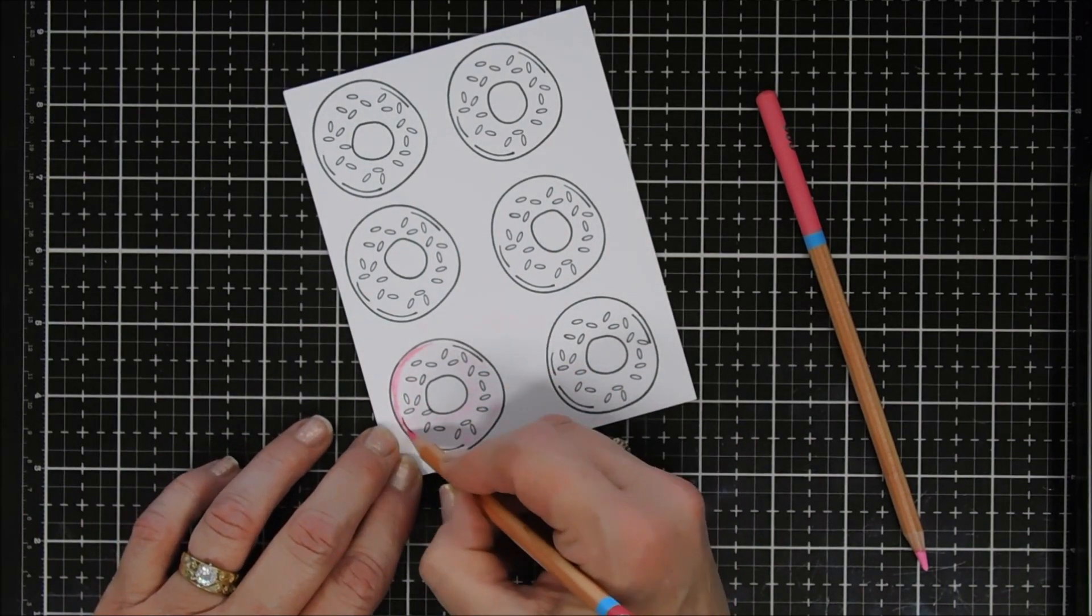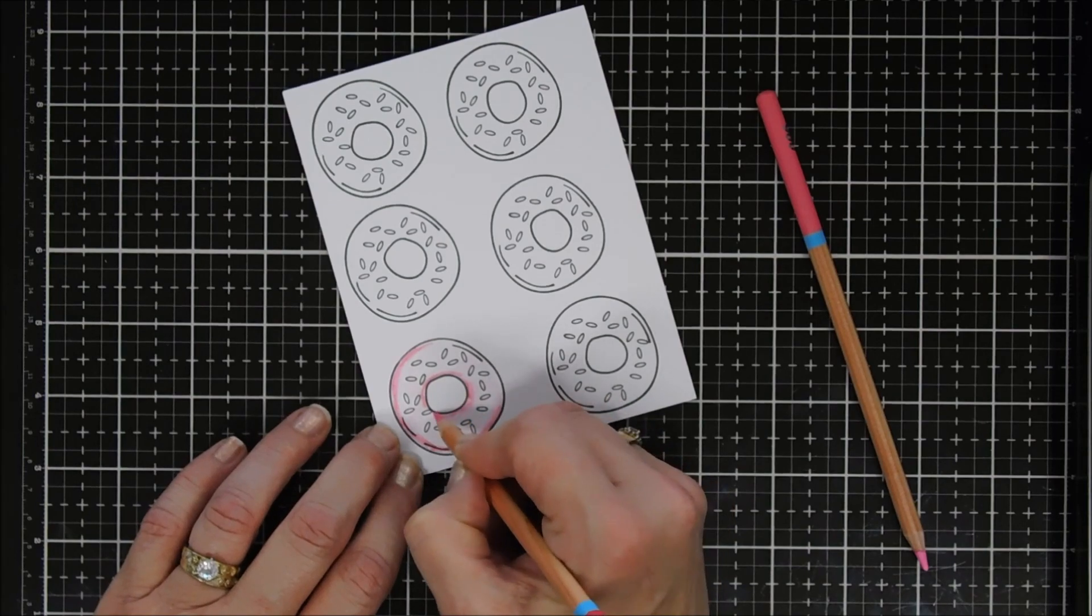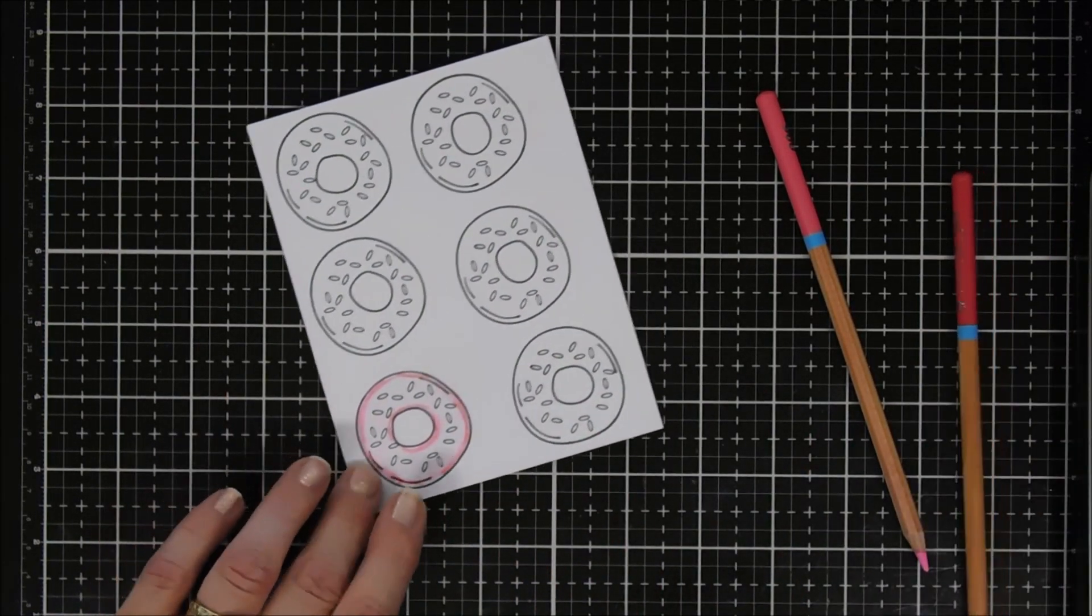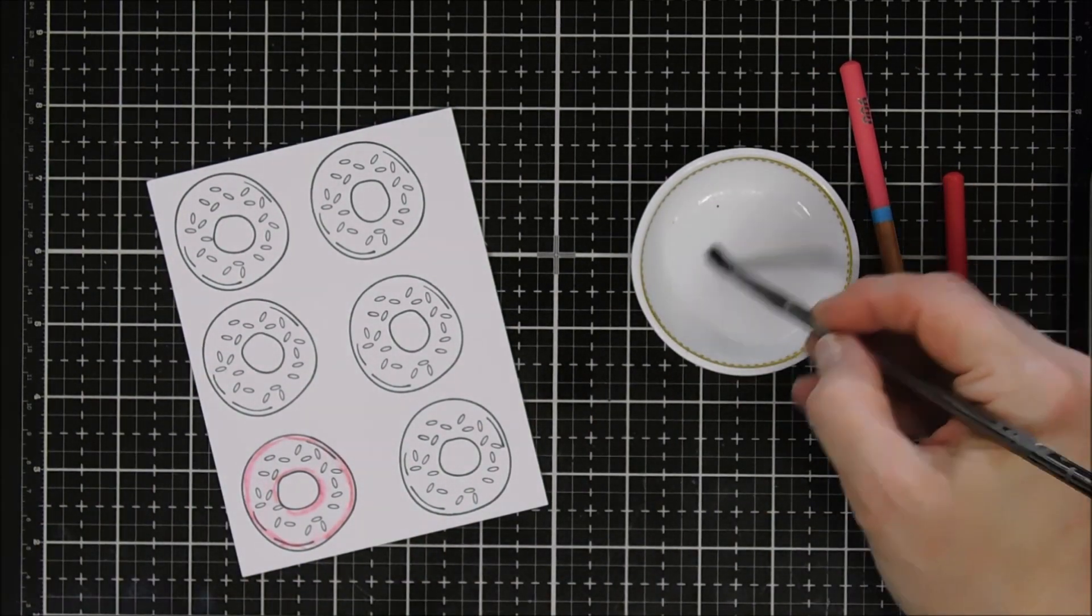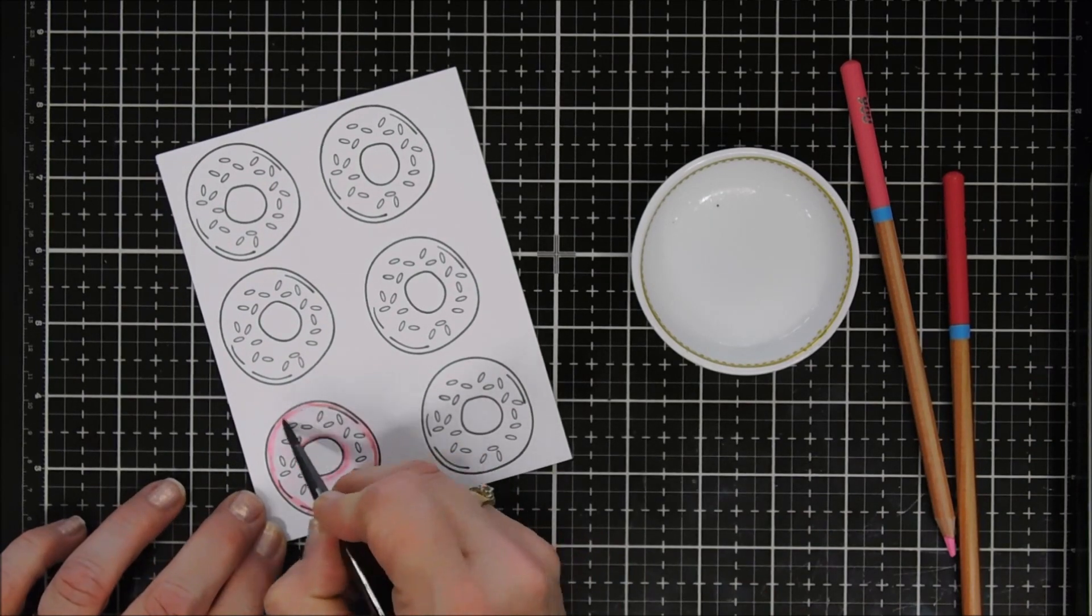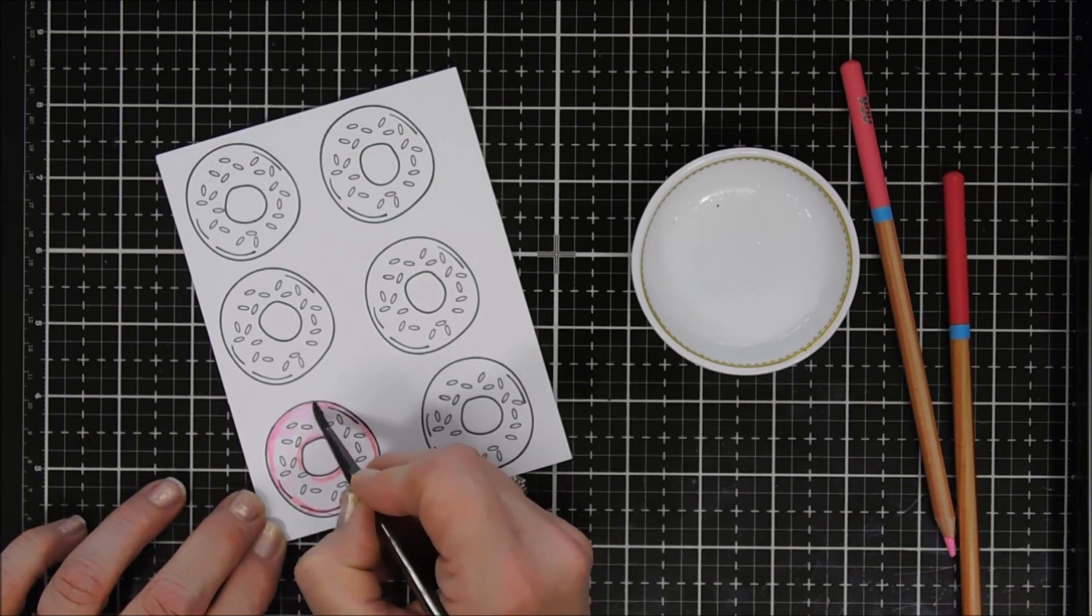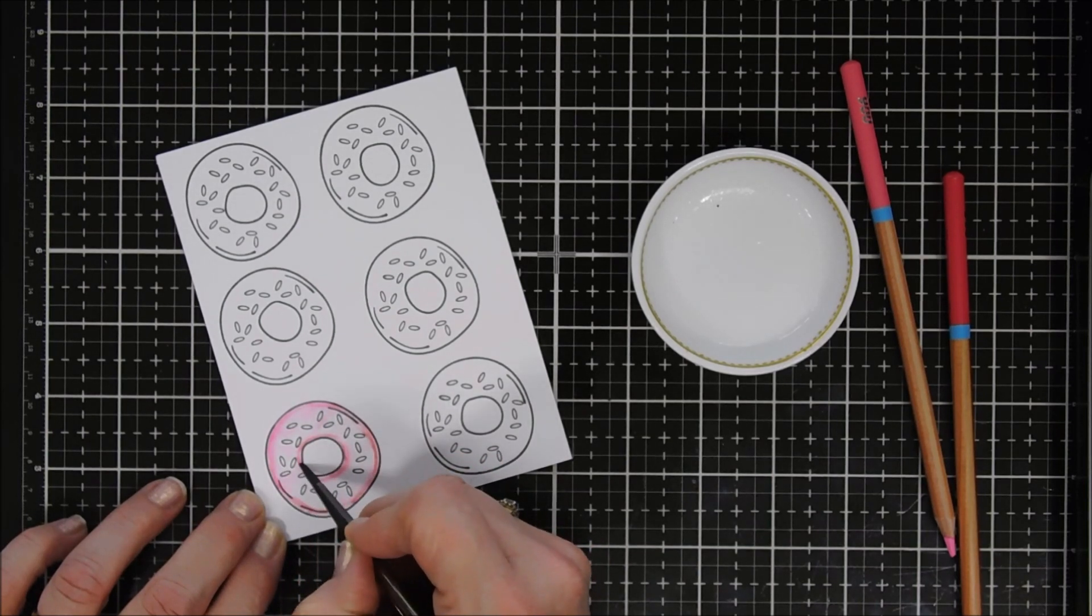I'm going to go around the edge and the center of my donut with my darkest shade of pink. That's going to add a little bit of shading to my donut. I'm bringing in a little dish and spraying a little bit of water in it. I'm not using watercolor cardstock so I'm just using a very light amount of water to spread out my pink color here.